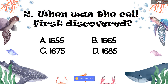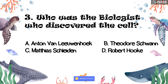Number three: Who was the biologist who discovered the cell? A. Anton van Leeuwenhoek. B. Theodorus I. C. Matthias Schleiden. D. Robert Hooke. The correct answer is letter D, Robert Hooke.